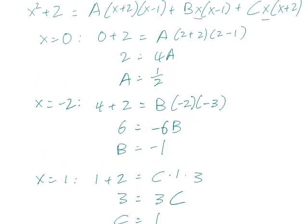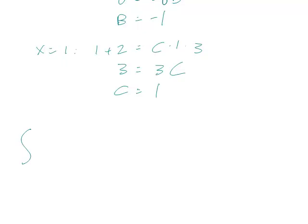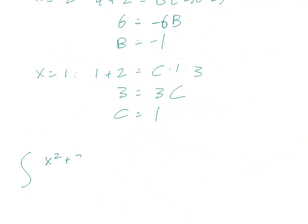So what we can do is rewrite the original integral as the sum of three integrals, each of which having only one linear term in the denominator. And so this is x squared plus 2 over x times x minus 1 times x plus 2 dx.